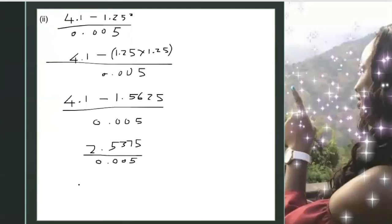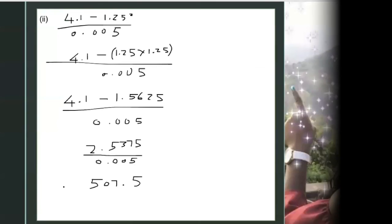So the denominator has 0.005. Now dividing this, the exact value is 507.5. And that's it.